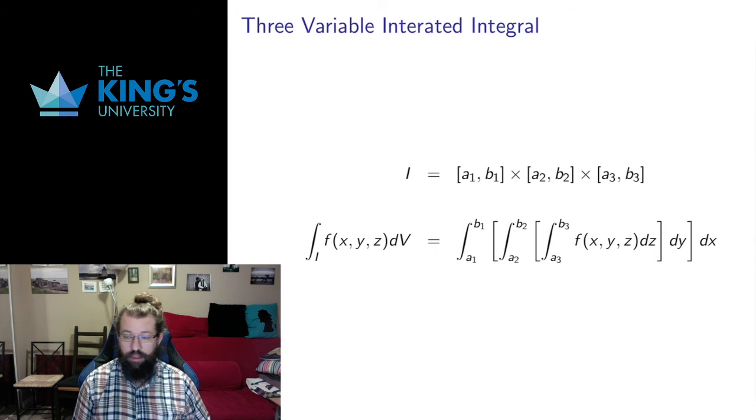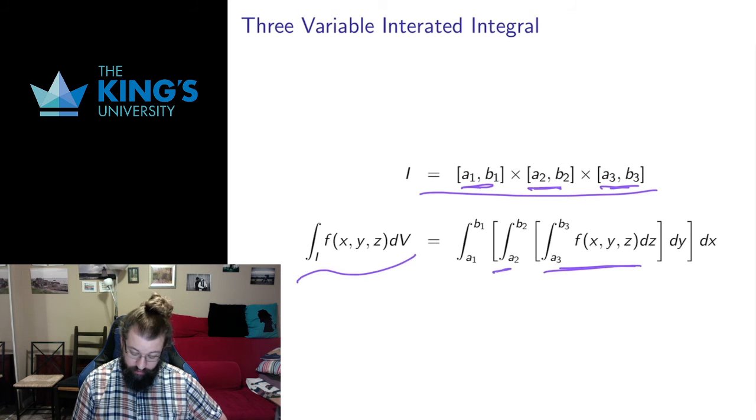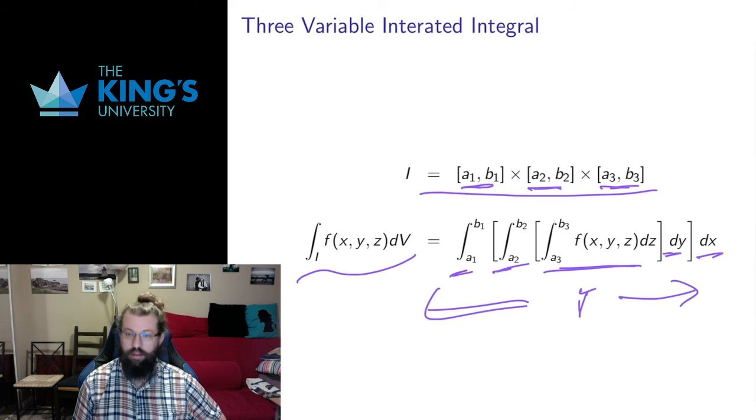I could do this in as many dimensions as I want. I'm not going to write it in the full Rn, but here it is for three variables. So if I have an interval in R3, so the bounds in x, the bounds in y, and the bounds in z, then I can think of the definite integral over that interval as an iterated integral where I do the z, and then after the z is done I do the y, and after the y is done I do the x. I always work from the inside out in these iterated integrals. I always do the thing that's inside, and then I go to the next variable moving out, and then I go to the next variable moving out.